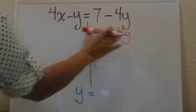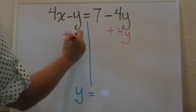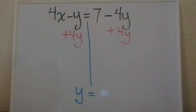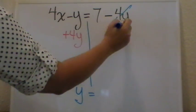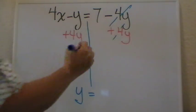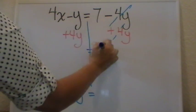Don't forget that what you do to one side we need to do to the other. And what we will have now is the 4y's are going to cancel, and all that we have here is the 7.